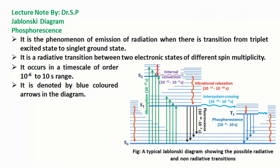Phosphorescence is the phenomenon of emission of radiation when there is a transition from a triplet excited state to the singlet ground state. It is a radiative transition between two electronic states of different spin multiplicity. It occurs on a timescale of order 10 to the power minus 6 to 10 seconds and is denoted by blue colored arrows in the diagram.